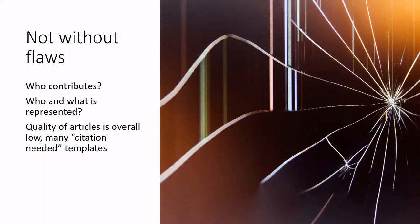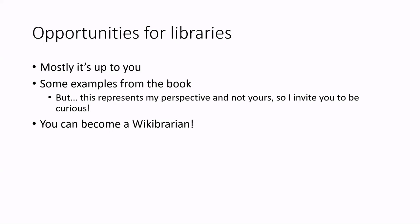One of the aims of the One Lib One Ref campaign that engages librarians is to help provide citations that are much needed on Wikipedia, and that is definitely an area where librarians can contribute. I'm going to cover some opportunities for libraries and librarians — but mostly it's really up to you. These are just some examples from the book representing my perspective, so I invite you to be curious about how you can make a contribution and become a Wikibrarian.